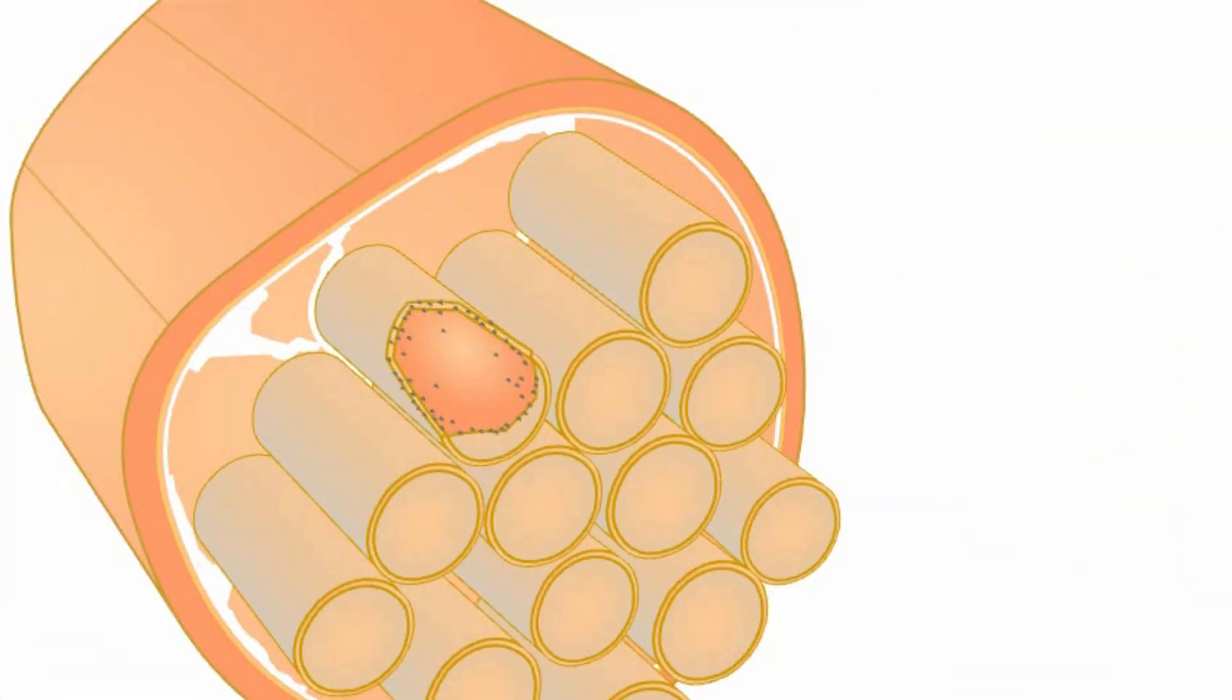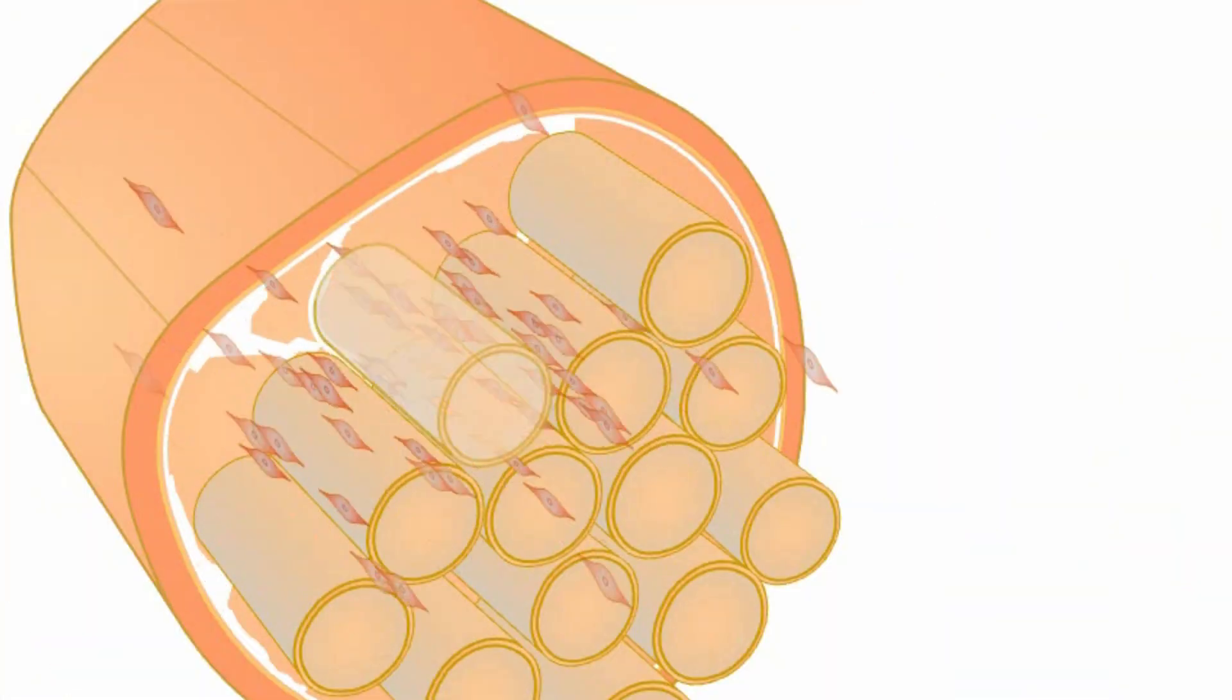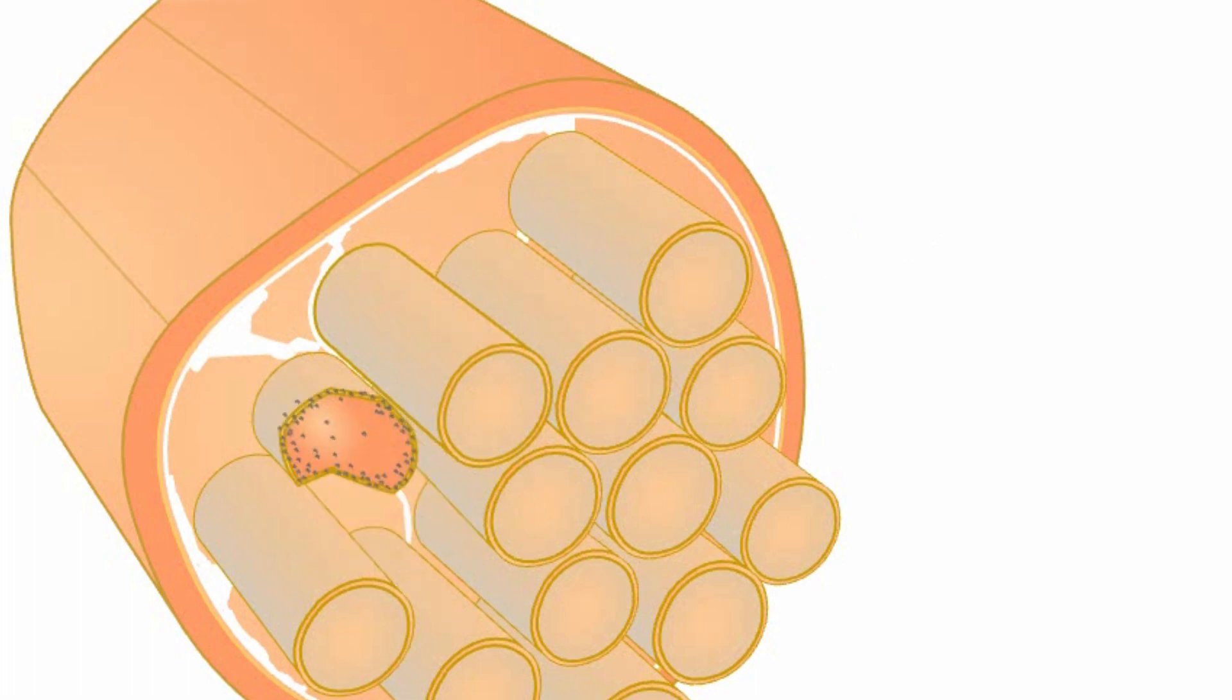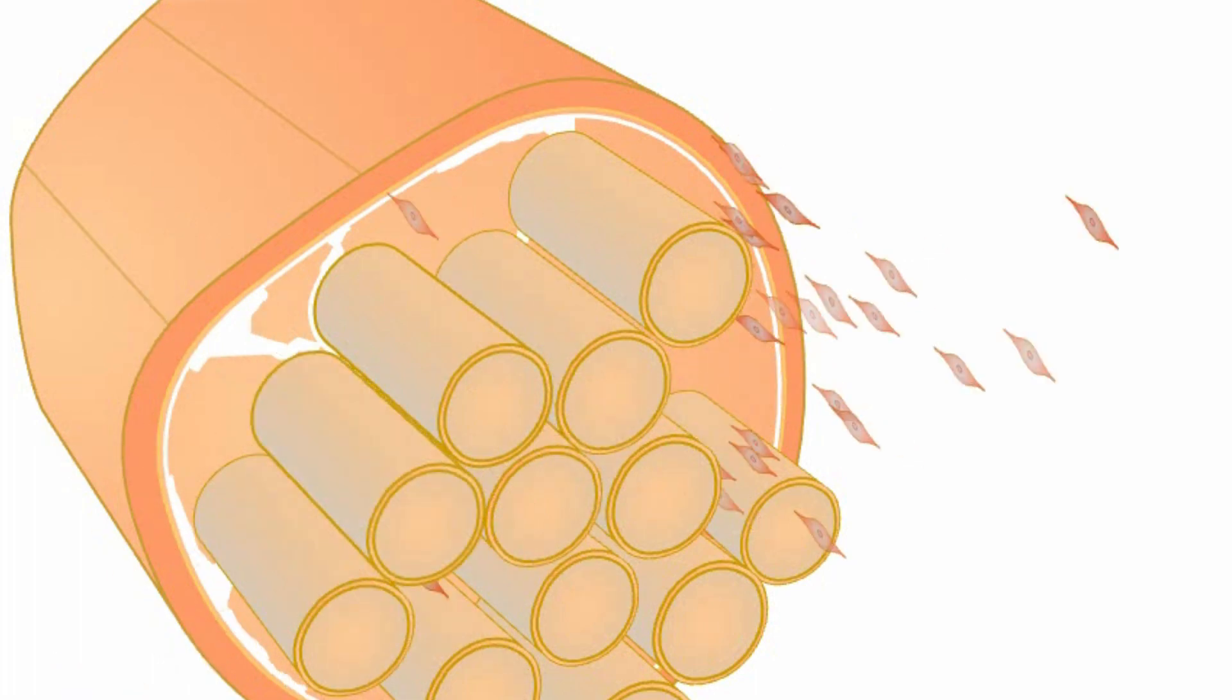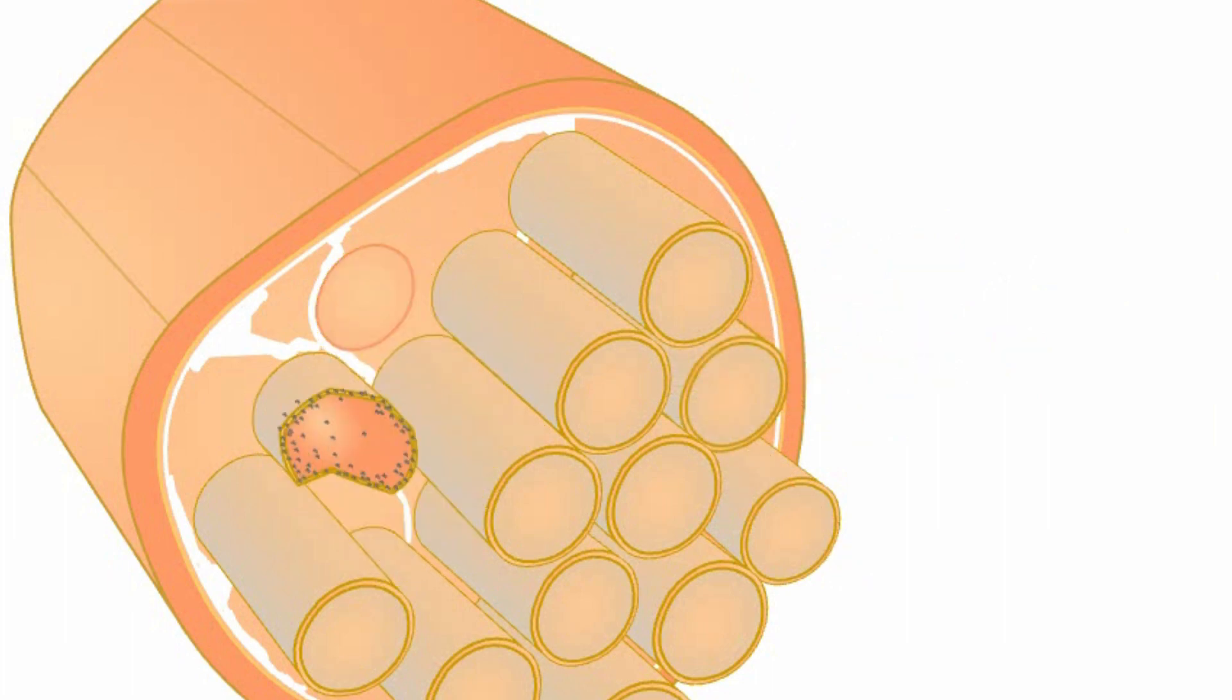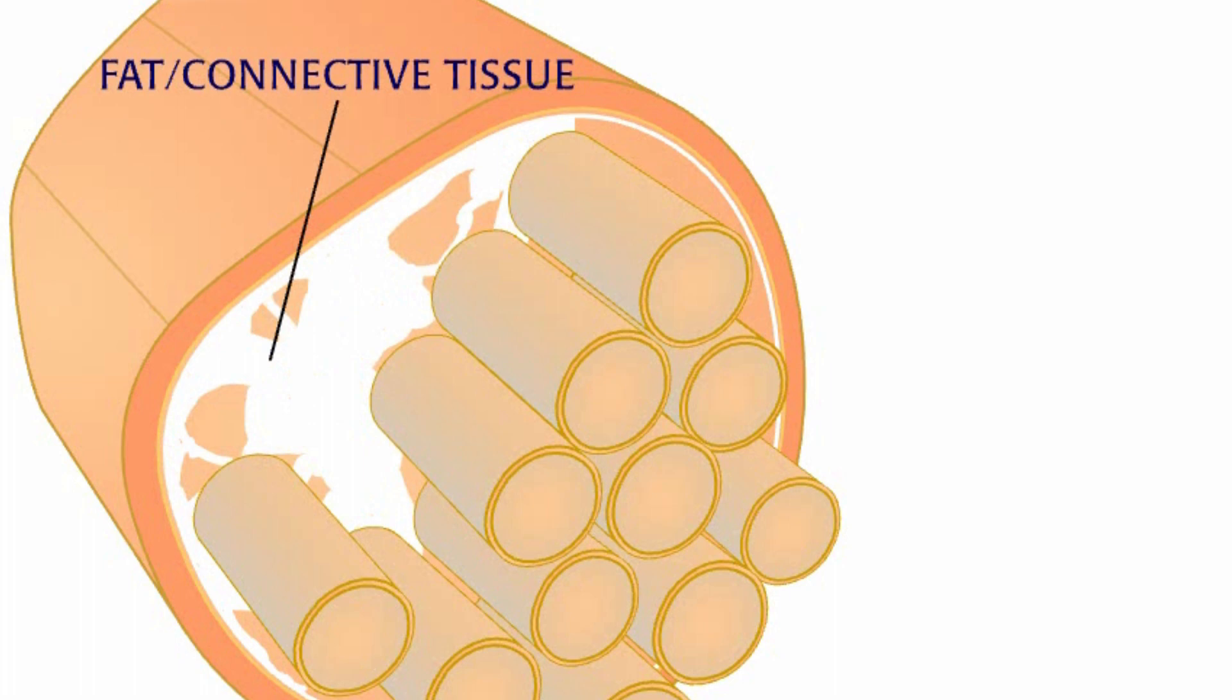Though dead cells are replaced by new ones when a boy is very young, as he gets older the number of dying cells overwhelms the repair capacity of the satellite cells. The cells simply stop creating new muscle. Instead, fat and connective tissue fill the space left by the dead muscle cells.